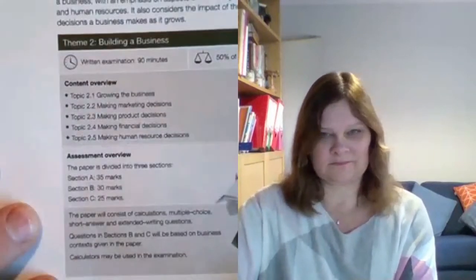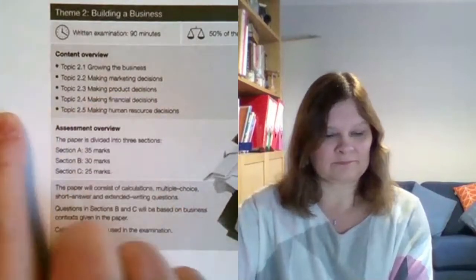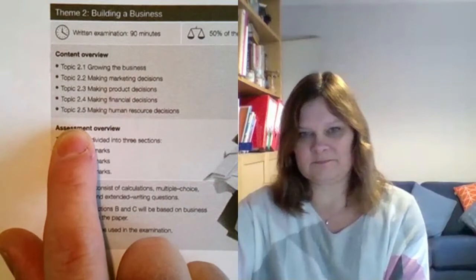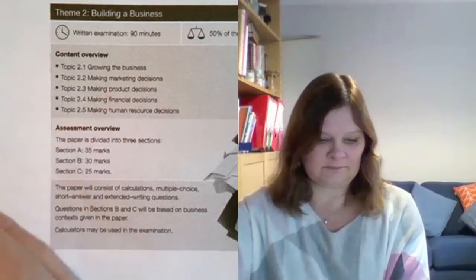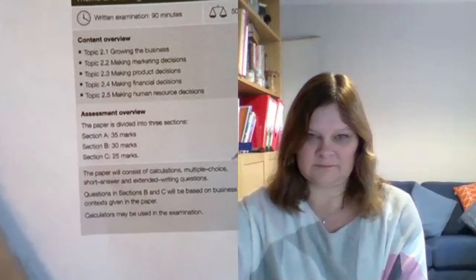The second part is Theme 2, about growing a business. We look at growing the business, marketing, making product decisions and making financial decisions. Starting from that small business, we explore how you grow it into a massive conglomerate like Microsoft or Apple. So we start very small and move really big — it's an exciting course that covers many areas.